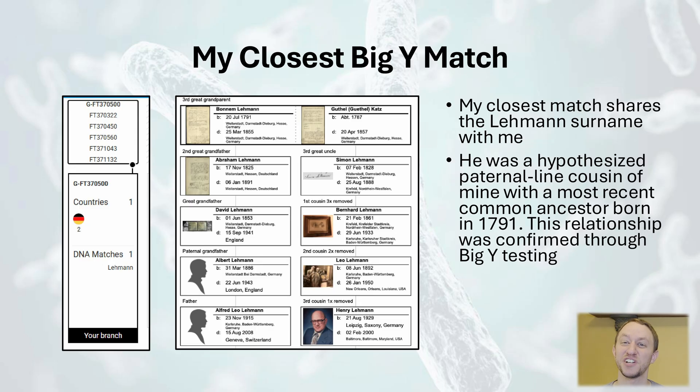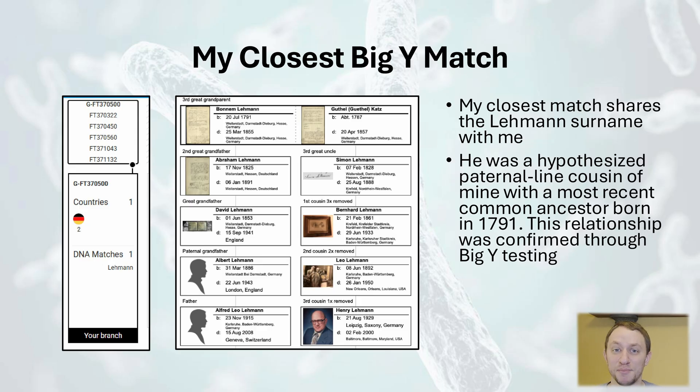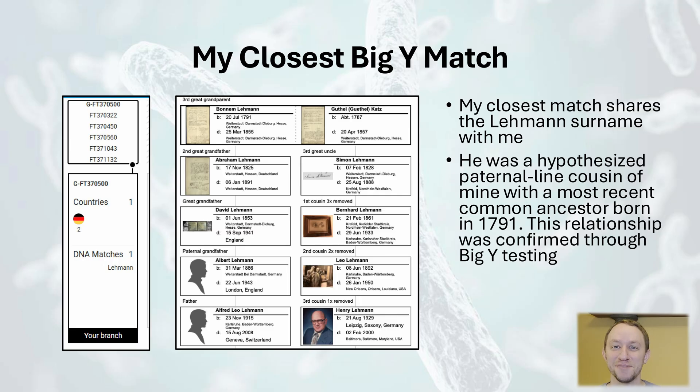This is an exciting result, but it's not always the case that you'll get this lucky. The result depicted here was actually the product of years of research. I had target tested this individual, who I believed was a distant Lehman cousin of mine. The traditional documentation suggested that the two of us shared a common Lehman ancestor born in 1791, and Big Y testing confirmed that we are indeed from the same Lehman family. Because we have traditional documentation to support this Big Y connection, we can actually refine our dating for the GFT370500 terminal haplogroup. We can say with certainty that these six mutations must have arisen in my line by 1791, which is the year our most recent common Lehman ancestor was born.